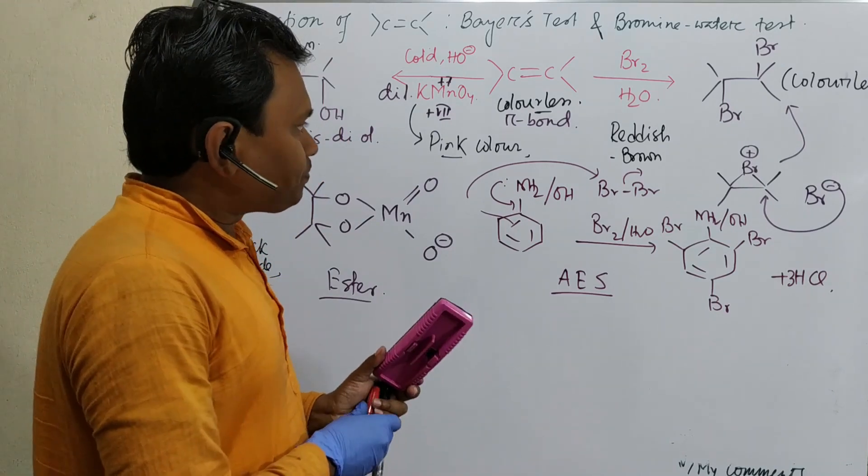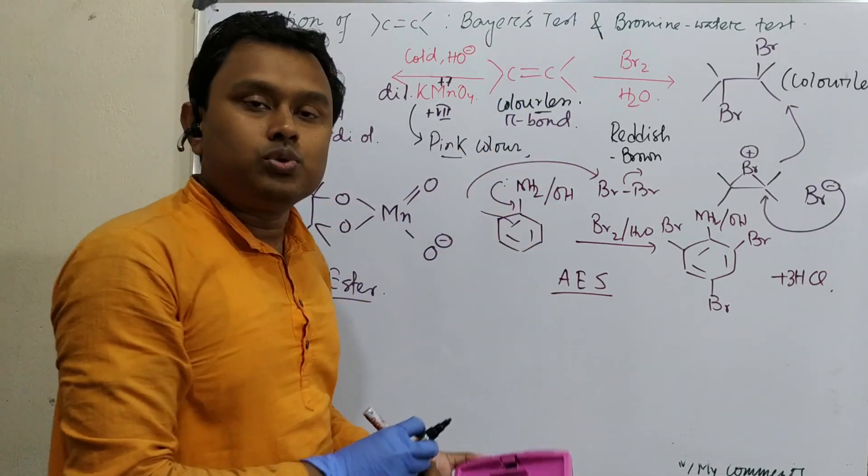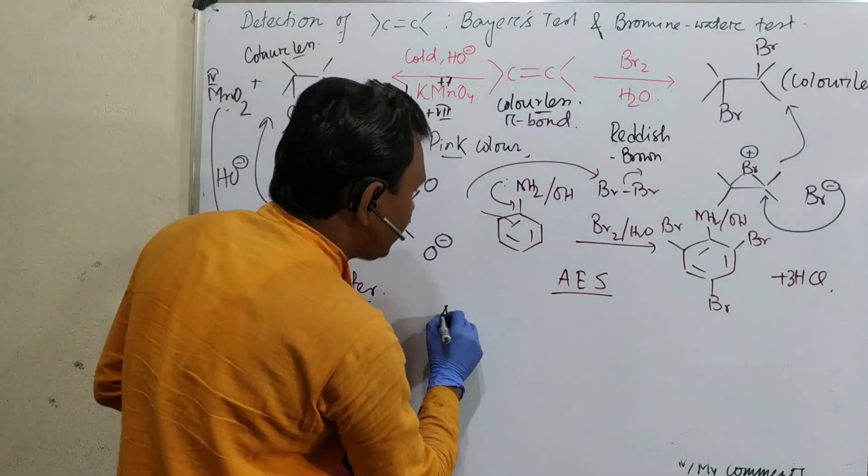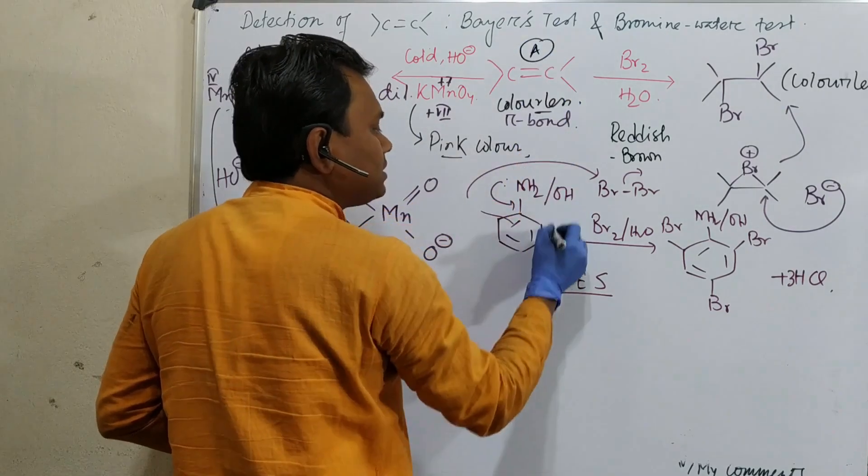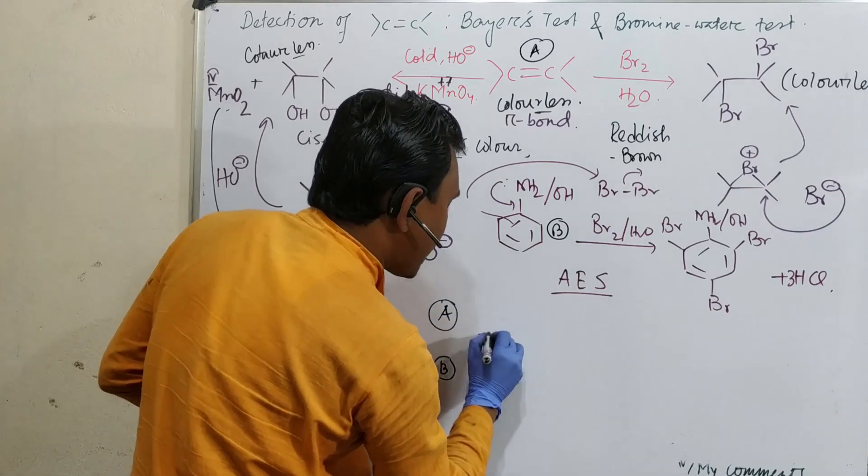But question: if you are given a simple alkene with aniline or phenol, how to distinguish? The answer is you can distinguish. How? First of all, you have given these two products. Product A and product B.